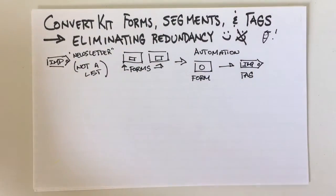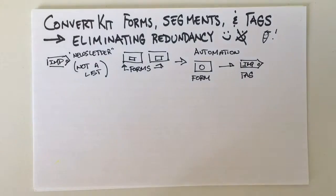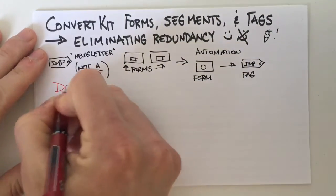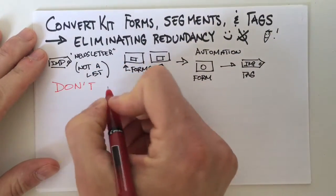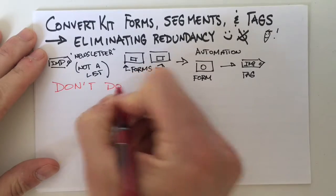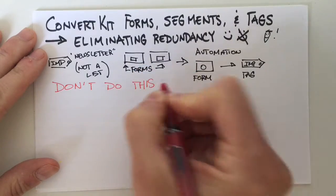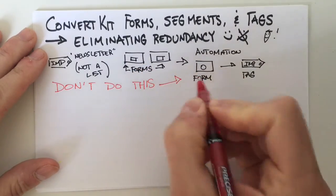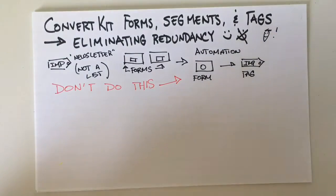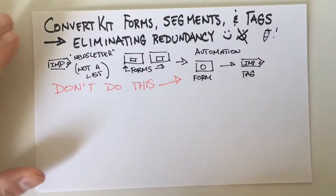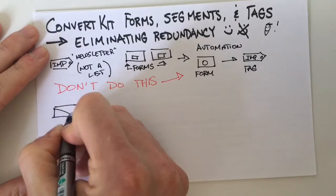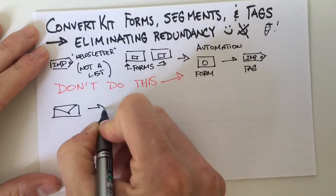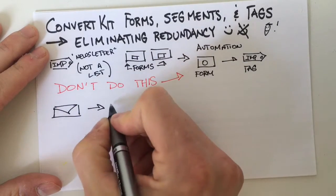You don't have to do that in ConvertKit. It's pretty straightforward, but since it is a little different I just want to point this out to you. Don't do this — it's redundant and it's unnecessary. Let me show you why. Because in ConvertKit, I can send a broadcast email directly to subscribers of a form.